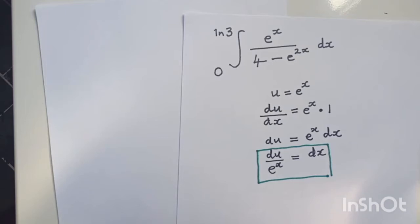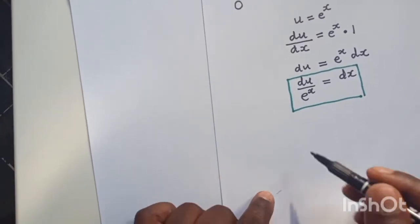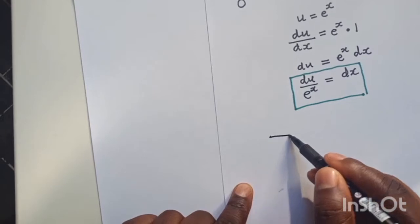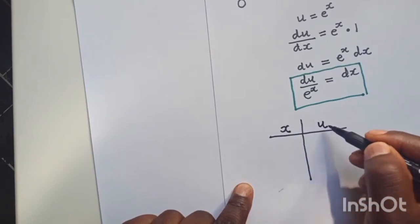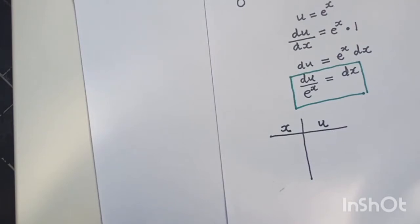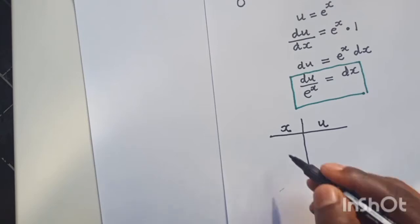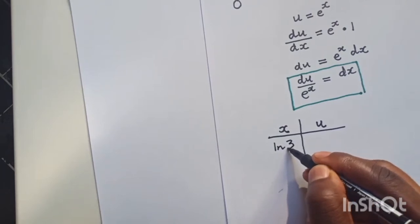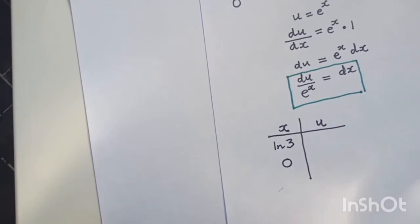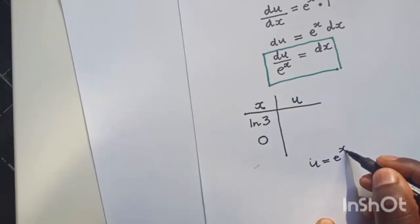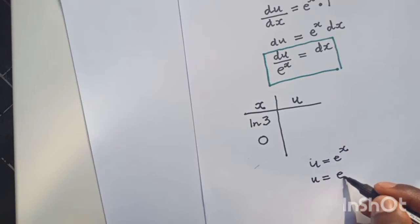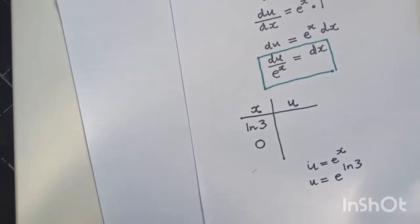Stage two is the change of limits. To change the limits, you prepare a table first. On the left side put x, and we want to change the limits from x to u. Remember the substitution states that u equals e to the power of x, so we want to convert everything in x to u. The upper limit of the original integral is ln 3 and the lower limit is 0.